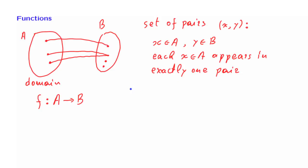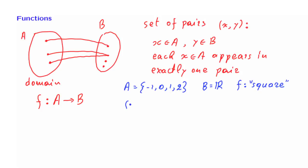As a concrete example, let us start with a set consisting of these elements here, and let B be the set of real numbers. Consider the function that squares its argument. This function would be represented by the following collection of pairs, where this is the value of x and this is the corresponding value of y. Any particular x shows up just once in this collection, but a certain y — for example, y equal to 1 — shows up twice, because minus 1 and plus 1 both map to the same element of B.